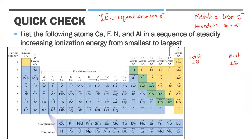Metals have the lowest ionization energy because they want to lose electrons. It is going to be much harder to take an electron from a non-metal. So typically, metals have the least ionization energy and non-metals have the greater ionization energy.